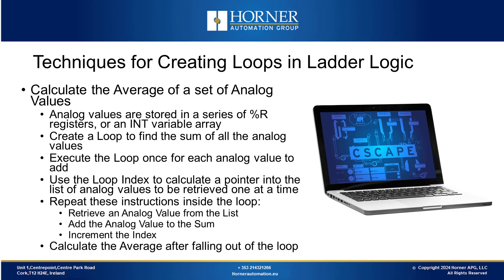For our first demonstration, we will be using a loop to calculate the average on a set of analog values. To calculate the average, we find the sum of the values and then divide that sum by the number of values. We will use a for loop to calculate the sum. We will have a series of analog values stored in an integer array using variable-based ladder. The loop will go through the array, retrieve values one by one, and add them together. Instructions repeating inside the loop will retrieve an analog value, add it to the sum, and increment the index. When we fall out of the loop and have the sum, we will then calculate the average.